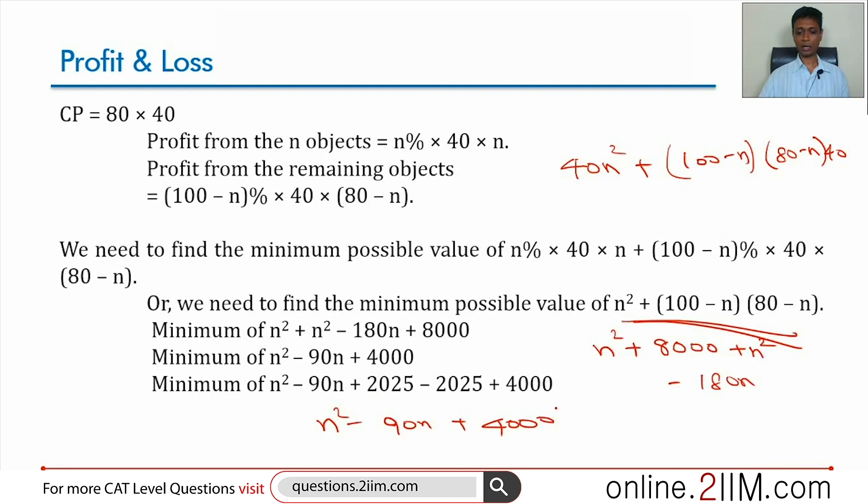We can write this differently as n square minus 90n plus 2025 minus 2025. We want to find the minimum of this expression. Take a second to think about why we're doing this: plus 2025 minus 2025.